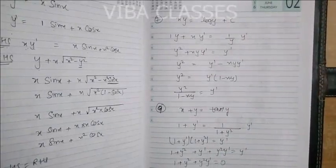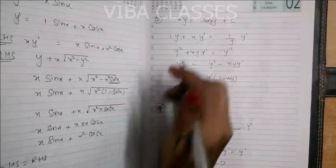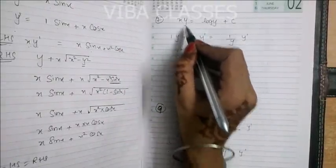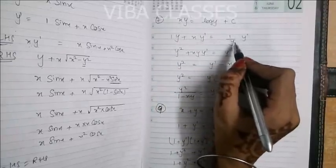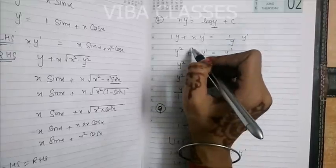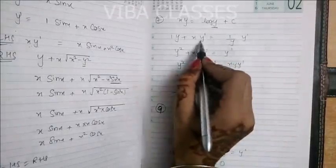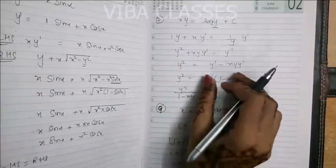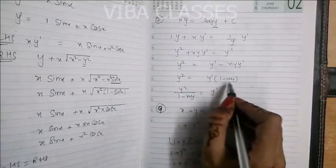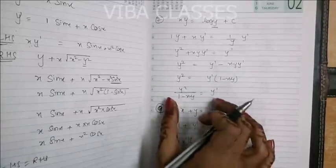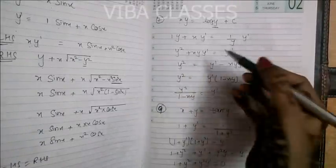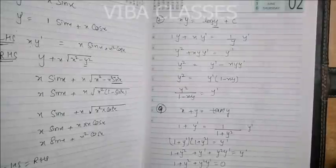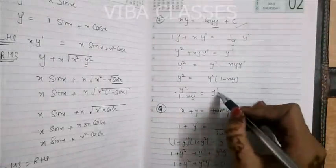Question number 7: xy = log y + c. Take the derivative on both sides. Apply the product rule on the left: (1)(y) + x(y') = (1/y)(y'). Multiply through by y: y² + xy·y' = y'. Rearranging y' to one side: y² = y' − xy·y' = y'(1 − xy). So y' = y²/(1 − xy), and this is your differential equation, which is satisfied.